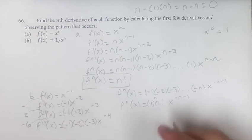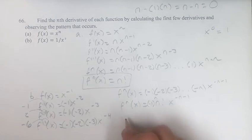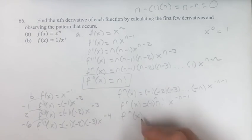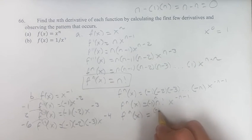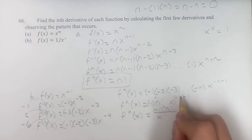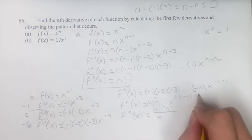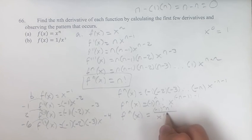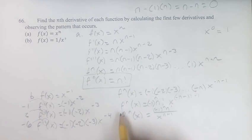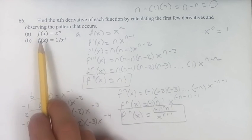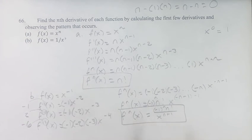Getting this into proper form with positive exponents, the nth derivative of 1/x equals negative 1 to the n times n factorial over x to the n plus 1. So this is the nth derivative of that function. As always, thank you for liking and subscribing, and I'll see you in the next video.